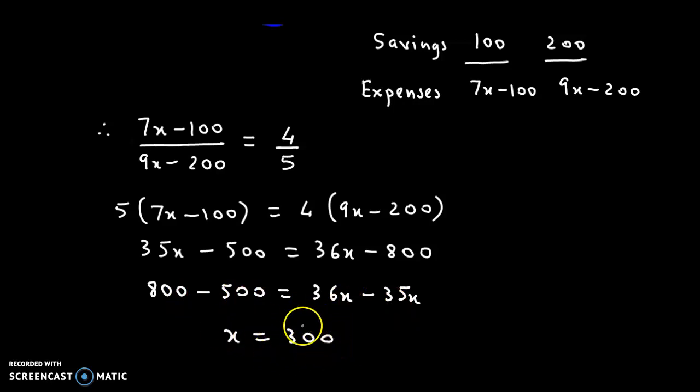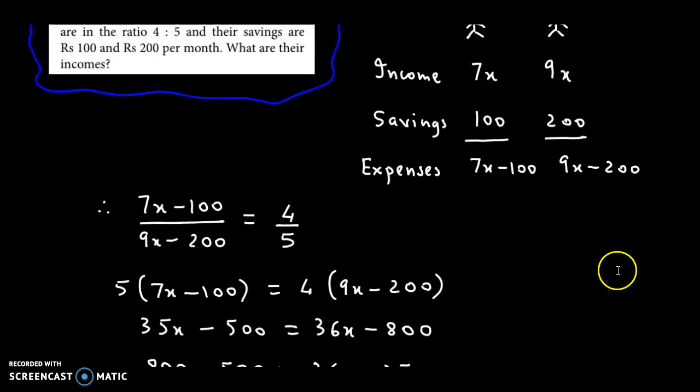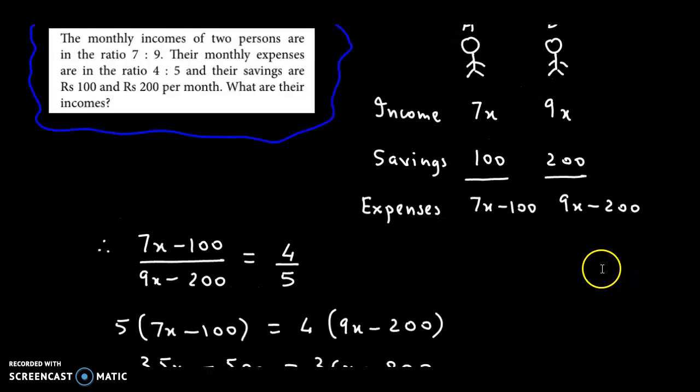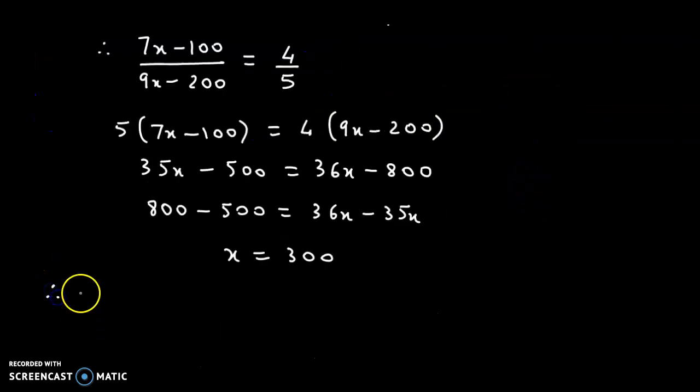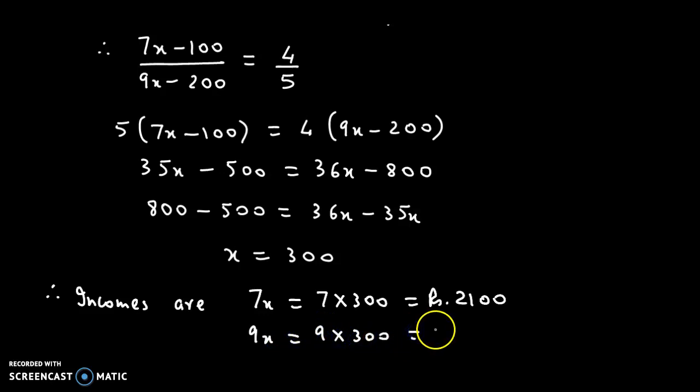So the common multiple is 300. We've been asked their incomes, which are 7x and 9x. Therefore the incomes are 7 times 300, which is 2100, and 9 times 300, which is 2700. These are the requisite incomes.